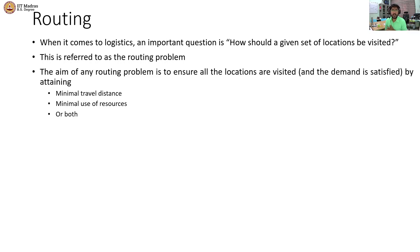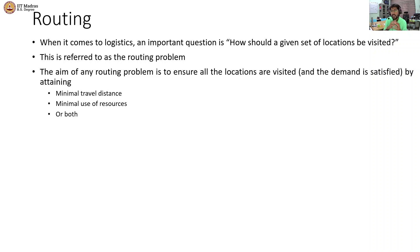Routing problems basically address this primary question in the logistics space: how should a given set of locations be visited? So if I have 10 different customers, in what order should I visit those customers? That is the routing problem. The aim of any routing problem is to ensure that all the locations are visited and the demand in those locations is also satisfied.